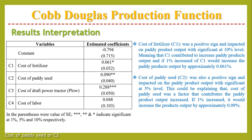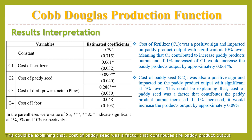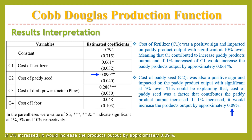Cost of paddy seed, or C2, was also a positive sign and had an impact on the paddy product output, with significance at the 5% level. This explains that the cost of paddy seed was a factor that contributed to the paddy product output increase. If there is a 1% increase, it would increase the product output by approximately 0.09%.